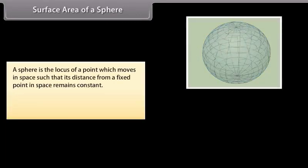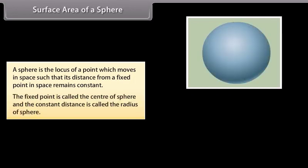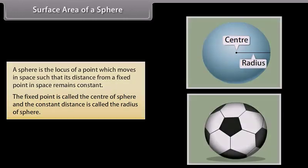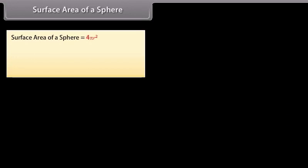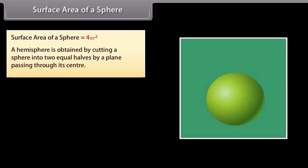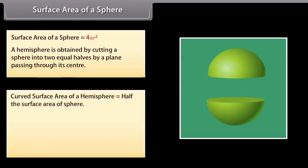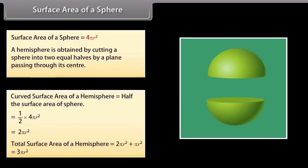A sphere is the locus of a point which moves in space such that its distance from a fixed point remains constant. The fixed point is called the center and the constant distance is called the radius. A sphere is like the surface of a ball. Surface area of a sphere = 4πr². A hemisphere is obtained by cutting a sphere into two equal halves. Curved surface area of a hemisphere = 2πr². Total surface area of a hemisphere = 3πr².